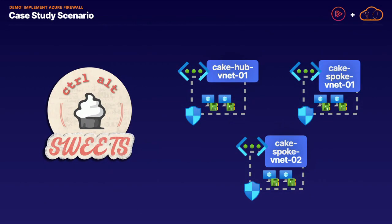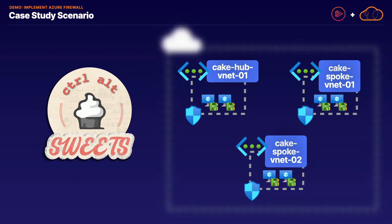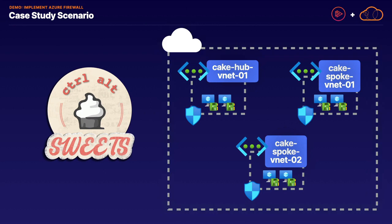For our case study scenario, we have our familiar Control-Alt-Suites organization that has three virtual networks inside of our Azure Cloud Sandbox. The setup is going to be available in the resources of this lesson. We're going to have our Hub VNet, our Spoke 1 VNet, and our Spoke 2 VNet. Specifically, we're going to be working inside of this Hub VNet for deploying our Azure Firewall resource and routing traffic through that firewall.